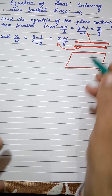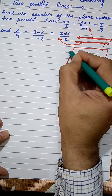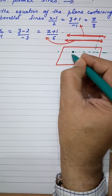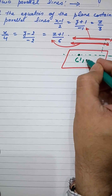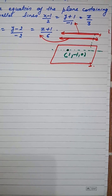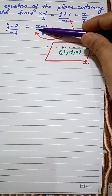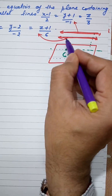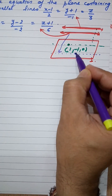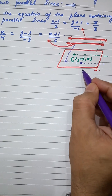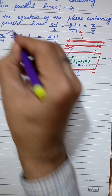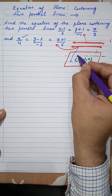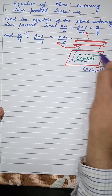When we take the first line on the plane, the point on the plane from that line is (1, -1, 0). Similarly, when we take the second line on the plane, the point from that line on the plane is (0, 2, -1). So these are the two points which lie on the plane.